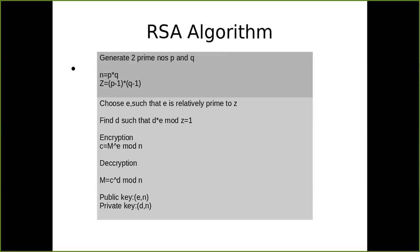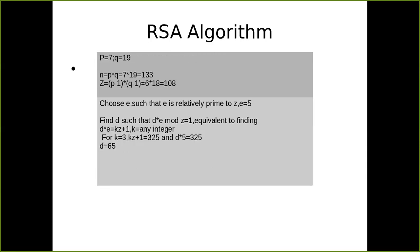Let's take a simple worked example. I'm choosing two prime numbers: p = 7 and q = 19. We compute n = 7 × 19 = 133, and z = (p − 1)(q − 1) = 6 × 18 = 108. Now we need to choose a public key e that is relatively prime to 108. We test values: 2 shares a common factor with 108, so does 3 and 4. But 5 and 108 share no common factor other than 1, so we choose e = 5.